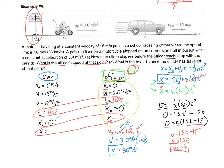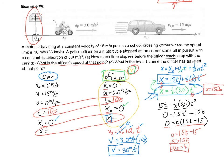For the total distance the officer traveled, I can plug t = 10 back into the officer's position equation: x = ½ × 3.0 × (10)² = ½ × 3.0 × 100 = 150 meters. That's how far it took for the officer to catch up. Great — problem solved!